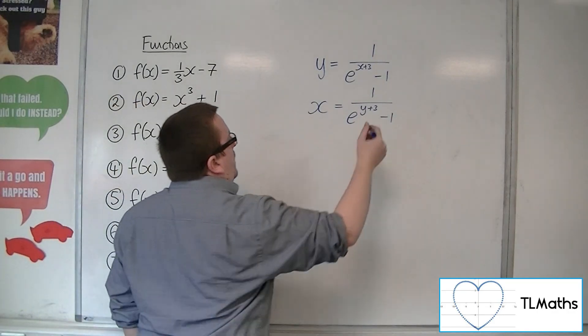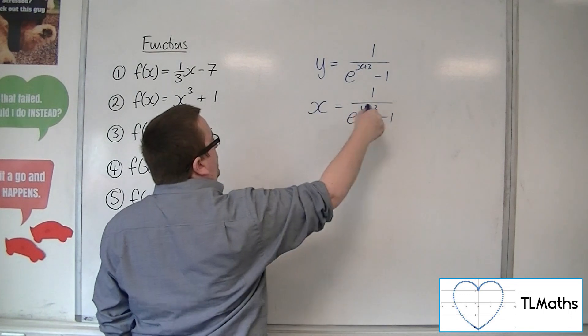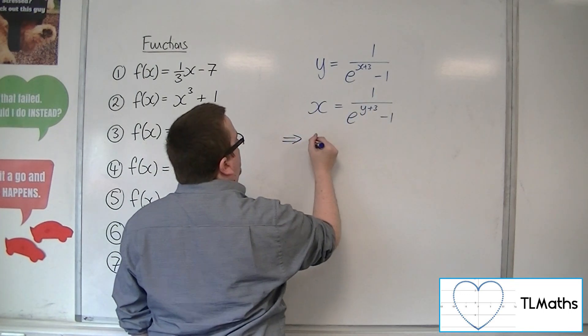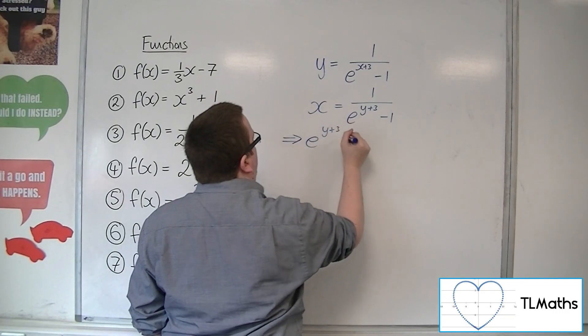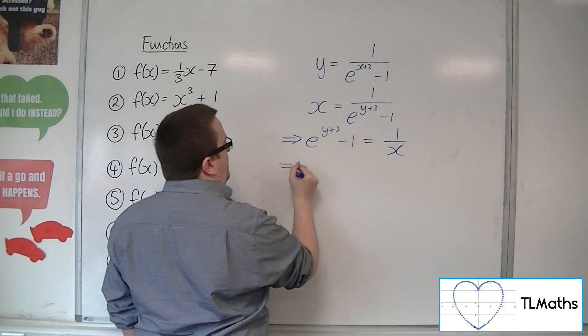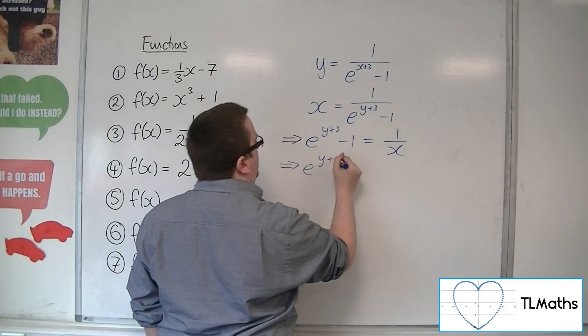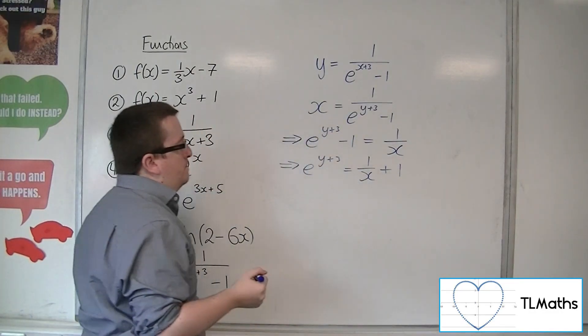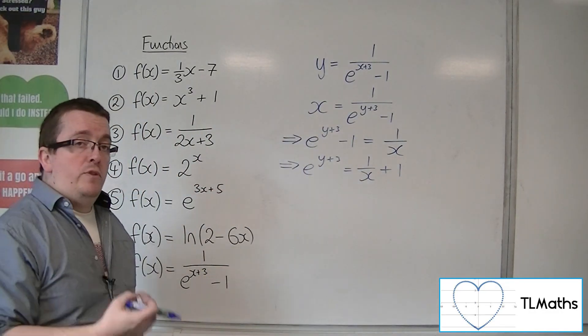Now, I'm going to multiply both sides by this denominator and divide both sides by x. So e^(y+3) - 1 is now 1/x. I'm going to have to add the 1 to both sides. Like so. Now, in order to get rid of the e, I'm going to have to ln both sides, log both sides base e.